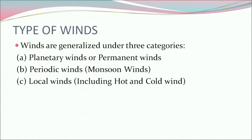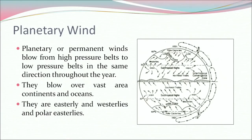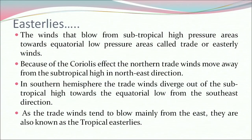Now what are the types of winds? Winds are generalized under three categories: planetary winds or permanent winds, periodic winds or monsoonal winds, and local winds including hot and cold winds. Planetary or permanent winds blow from high pressure belt to low pressure belt in the same direction throughout the year. They blow over vast areas — continents and oceans. They are trade winds or easterlies, westerlies, and polar easterlies. The winds that blow from subtropical high pressure areas towards equatorial low pressure areas are called trade or easterly winds. Because of the Coriolis effect, the northern trade winds move away from the subtropical high in the northeast direction. In the southern hemisphere, the trade winds diverge out of the subtropical high towards the equatorial low from the southeast direction. As the trade winds tend to blow mainly from the east, they are also known as the tropical easterlies.